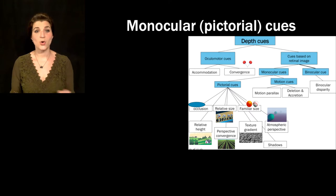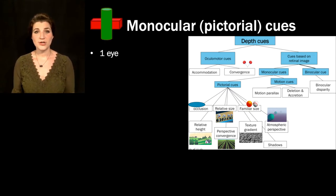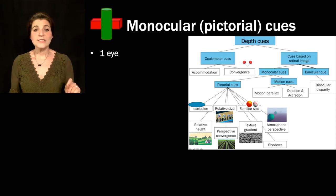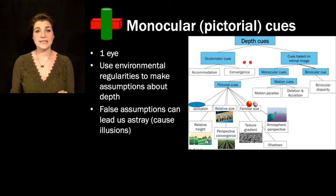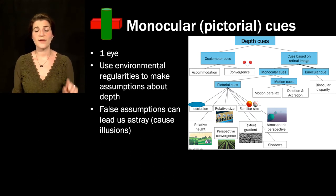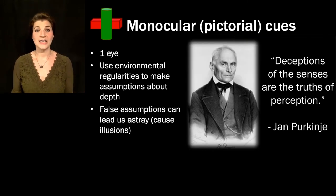Our next category of depth cues are monocular pictorial cues—called monocular because they only require one eye. Rather than being about absolute distance like accommodation and convergence, these help us place items in space relative to one another. Occlusion is one example: a red block being occluded by another object indicates it's farther away. We get meaning out of these pictorial cues because they are normally informative. Illusions give us clues about normal perceptual processes—what Purkinje called the truths of perception.